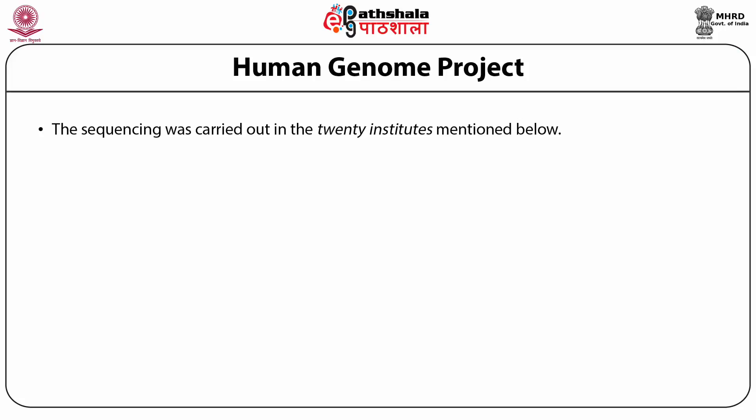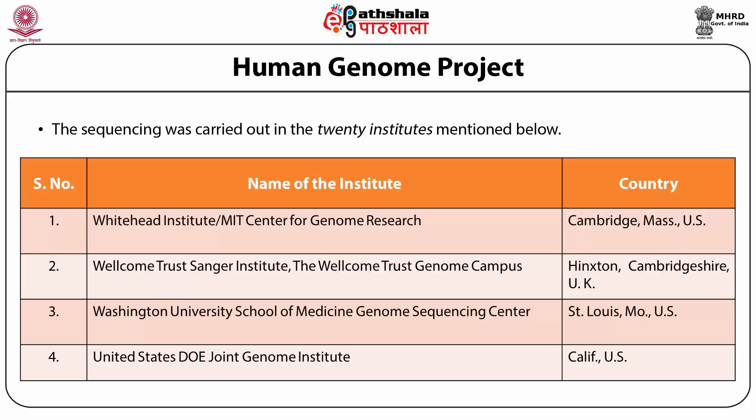The sequencing was carried out in 20 institutes. These included the Whitehead Institute or MIT Center for Genome Research in Cambridge, Massachusetts; the Wellcome Trust Sanger Institute in Cambridge Shire, United Kingdom; the Washington University School of Medicine Genome Sequencing Center in St. Louis; and the US DOE Joint Genome Institute in California.